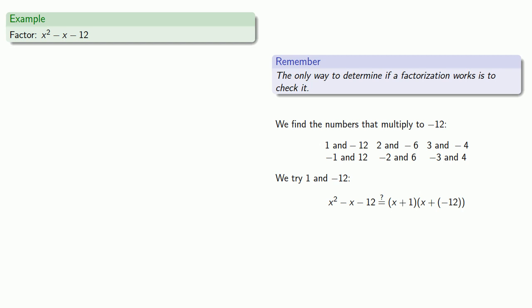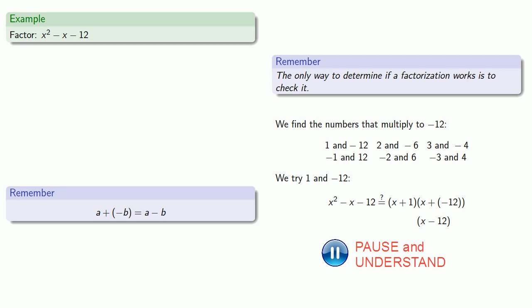Before we check our factorization, let's clean up our factors a little bit. Remember that a plus negative b is the same as a minus b. So instead of writing x plus negative 12, I can write this second factor as x minus 12. Let's see if this factorization works by expanding. That's not what we want. So 1 and negative 12 don't work.